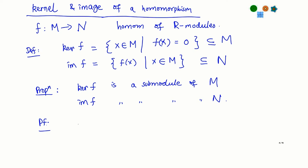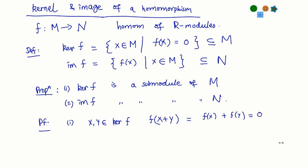Let us check that the kernel is a submodule. I need to check two things: first, closure under addition. If I take two elements x and y in the kernel, I need to check whether x + y is in the kernel. To check whether their sum is in the kernel, I apply F and see if it gives 0. F(x + y) = F(x) + F(y) because F is a homomorphism, and that equals 0 + 0 = 0. So x + y is also in the kernel of F.